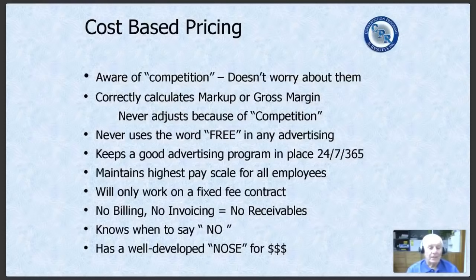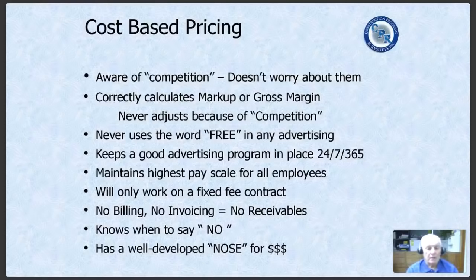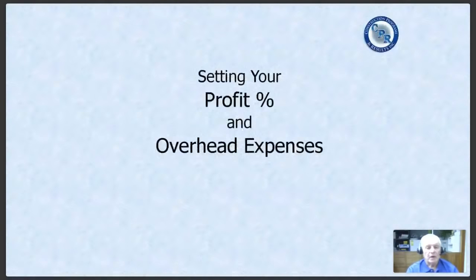Good contractors also have a well-developed nose for money — they ferret out the types of jobs where they make the most money. Two examples we discuss in our 'Making the Numbers Work in Construction' class: house leveling (re-leveling houses where corners have dropped, windows and doors are sticking) — your markup on that can be two, three, or four times cost. The other is assisted living complexes, which are desperately looking for contractors. That's what I mean by having a nose for money.